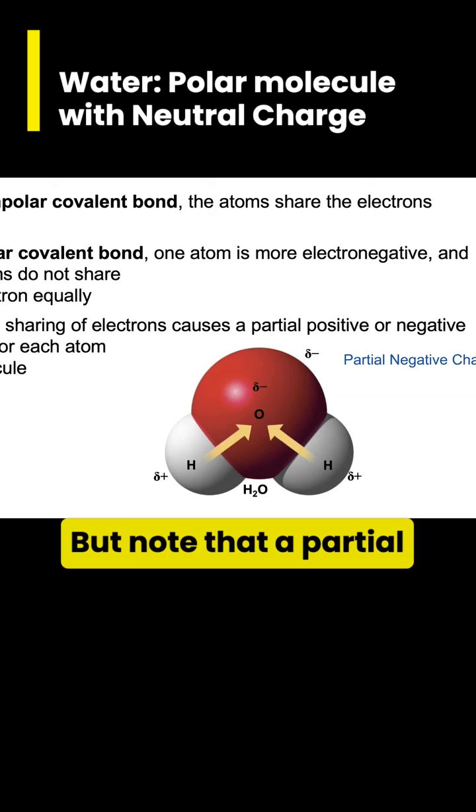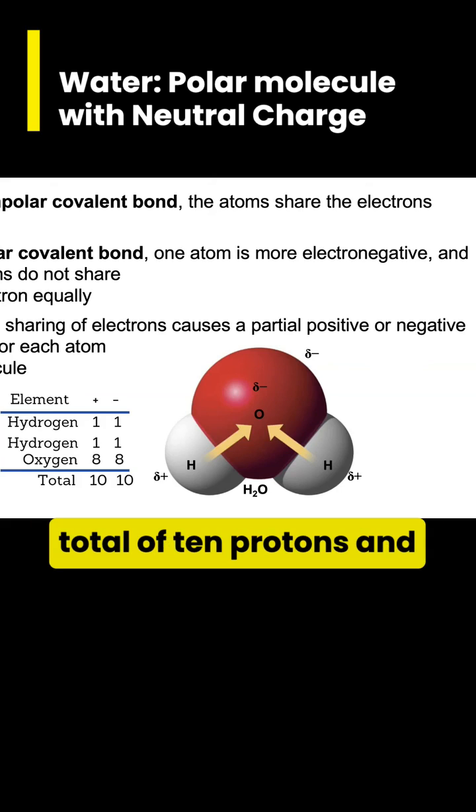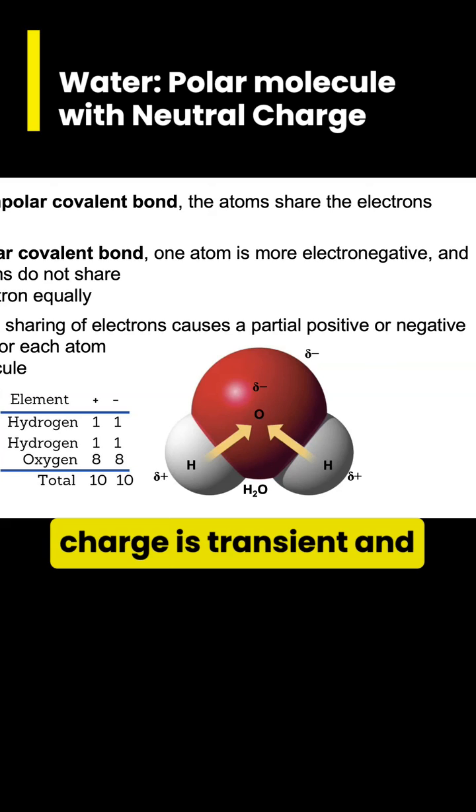But note that a partial charge is not the same as a true charge. The water molecule has a total of 10 protons and 10 electrons, so water is neutral and has a neutral charge overall. A partial charge is transient and only due to asymmetric distribution of electrons in the bond.